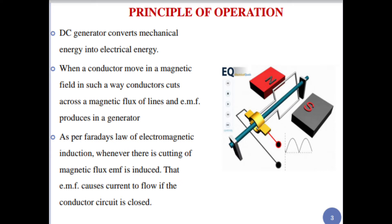Now we see the principle of operation. A DC generator converts mechanical energy into electrical energy. When a conductor moves in a magnetic field in such a way that the conductor cuts across the magnetic flux lines, an EMF is produced in the generator.